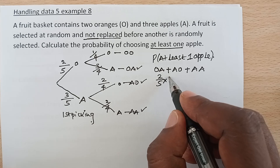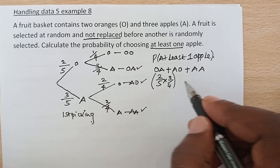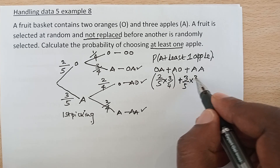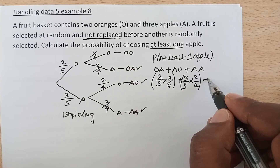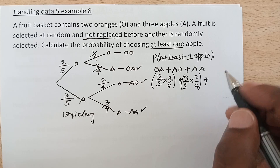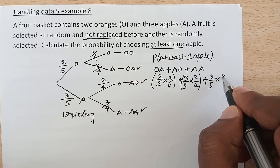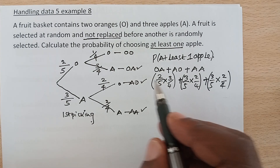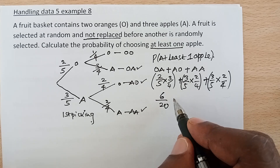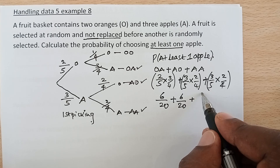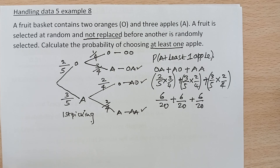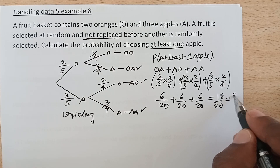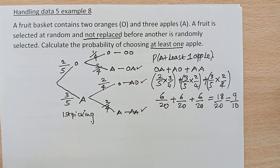So what is this? Orange-apple is 2 out of 5 times 3 out of 4, plus apple-orange is 3 out of 5 times 2 out of 4, plus apple-apple is 3 out of 5 times 2 out of 4. That gives us 6 out of 20, plus 6 out of 20, plus 6 out of 20, which is basically 18 out of 20, and in simplified form we can have 9 out of 10.